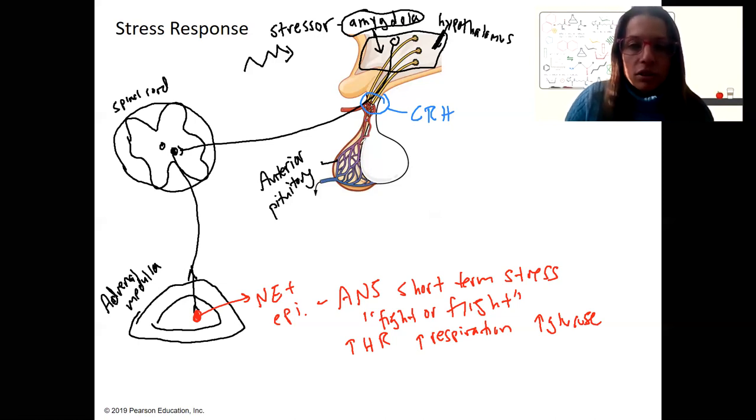CRH is going to travel to the anterior pituitary and is going to signal the release of what? Adrenal corticotropin hormone. A hormone that is going to be a tropic hormone for the adrenal gland. This ACTH is going to travel through the bloodstream and is going to target what? The adrenal gland. But where? Actually, the cortex. The adrenal cortex contains other cells, still endocrine cells, that are going to release hormones. Different hormones, right? These cells don't produce epinephrine and norepinephrine.